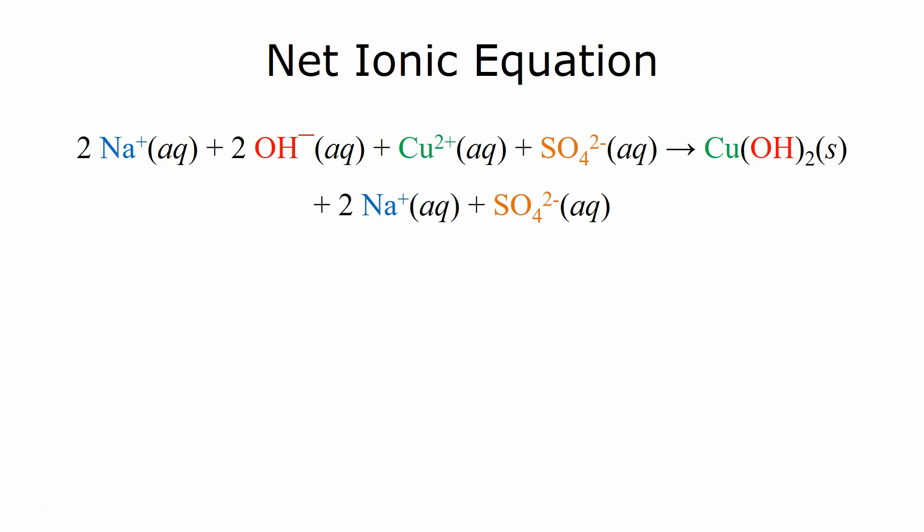The last equation is the net ionic equation. Now, if we take a look at this equation, this total ionic equation, we notice that the sodium ions exist in the exact same form on both sides of the reaction arrow. We have two sodium ions as reactants and two sodium ions as products.